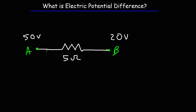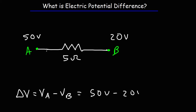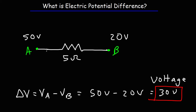Now to determine the electric potential difference, all we need to do is calculate the difference in the potentials at point A and B. So it's simply VA minus VB — that's 50 volts minus 20 volts. So the electric potential difference across this resistor is 30 volts. Electric potential difference is basically voltage; it's the voltage between two points.